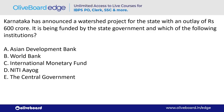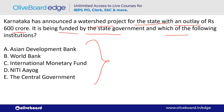Karnataka has announced a watershed project for the state with an outlay of ₹600 crore. It is being funded by the state government and which institution? The answer is World Bank — option B.